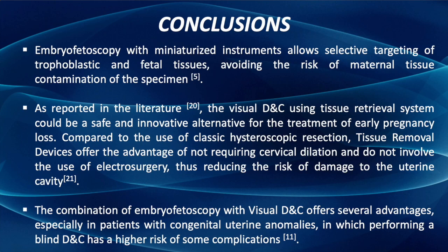Embryofetoscopy with miniaturized instruments allows selective targeting of trophoblastic and fetal tissue, avoiding the risk of maternal tissue contamination of the specimen. As reported in the literature, the visual DNC using a tissue retrieval system is a safe and innovative alternative for the treatment of early pregnancy loss. Compared to hysteroscopic resection, tissue retrieval devices offer the advantage of not requiring cervical dilation and not involving the use of electrosurgery, thus reducing damage to the uterine cavity. The combination of embryofetoscopy with visual DNC offers several advantages, especially in patients with congenital uterine anomalies in which performing a blind DNC has a higher risk of complications.